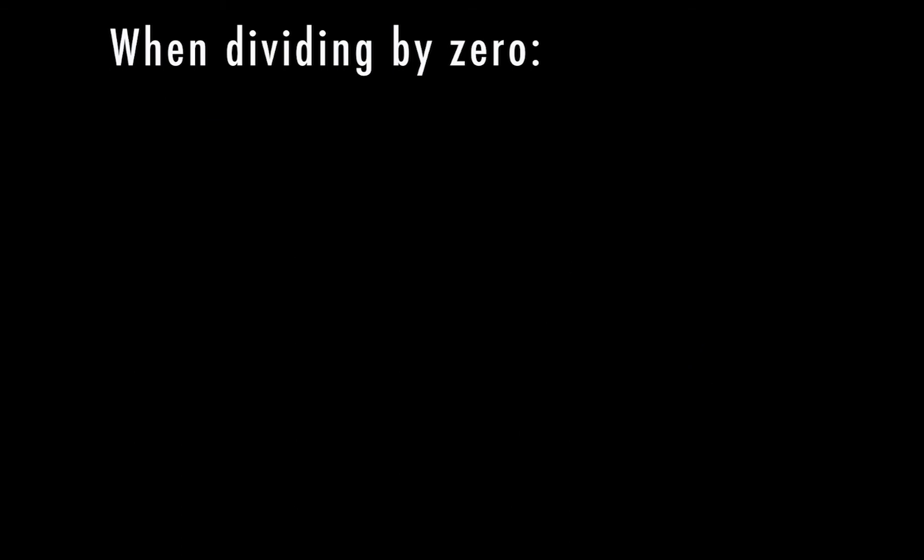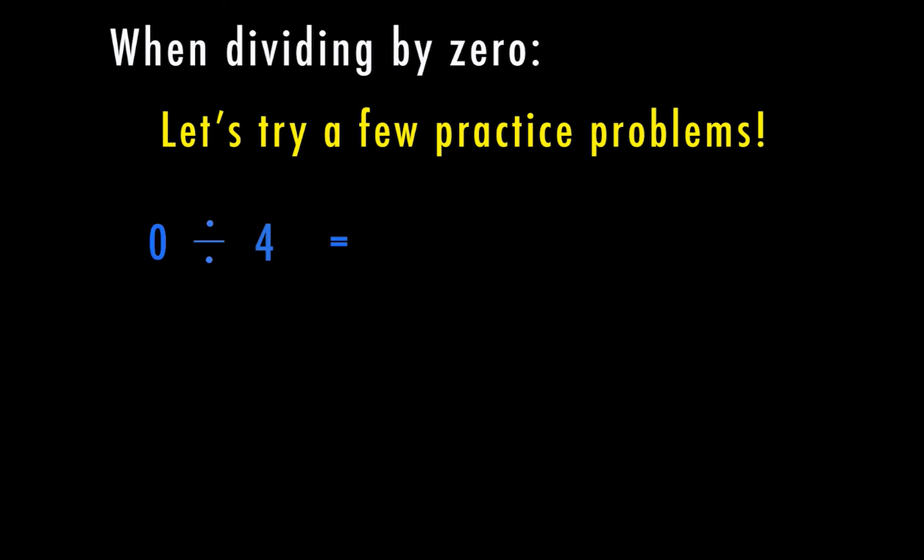Now, this is kind of a confusing concept. So let's look at a couple more examples here. And we're going to go through some practice problems. So first, we have zero divided by fourth. Well, if I have zero and I'm dividing it into fourths, I'm going to end up with zero as my answer.